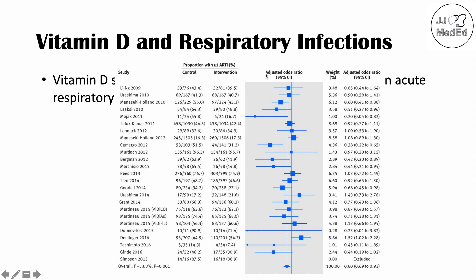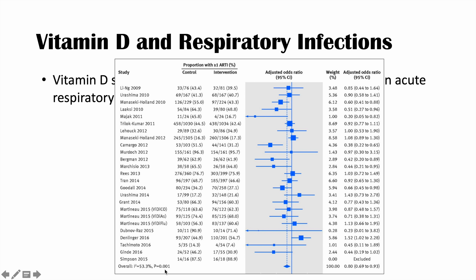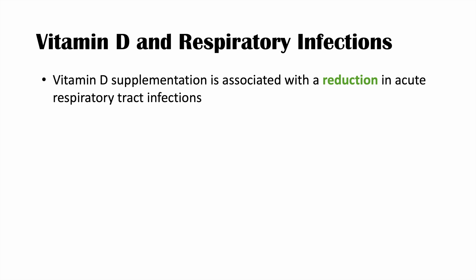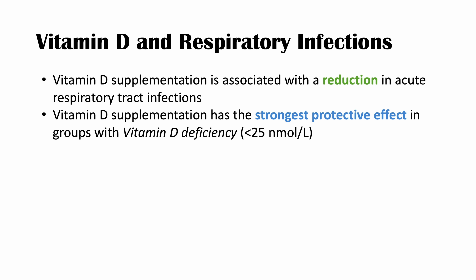Looking at the combined adjusted odds ratio, we see that it comes to 0.80, showing that vitamin D supplementation reduces the incidence of respiratory tract infections. This data is statistically significant, with a p-value less than 0.05. Because of the variation in data from these articles, the authors also did a subgroup analysis, looking more specifically at certain groups of participants. What they found was that vitamin D supplementation has the strongest protective effect in groups with vitamin D deficiency.